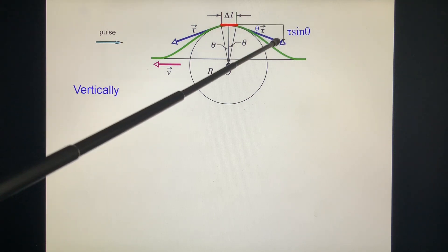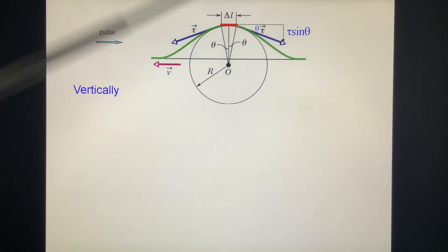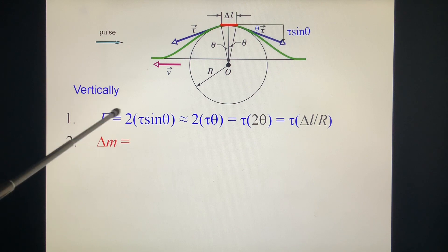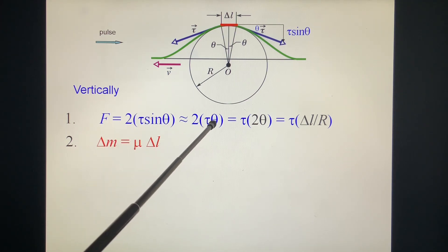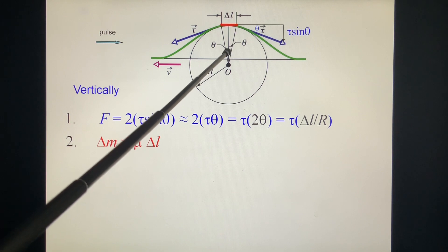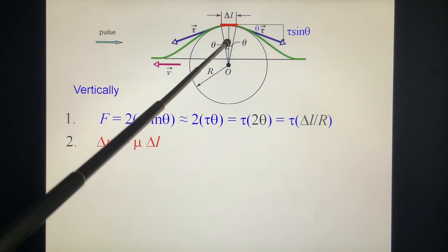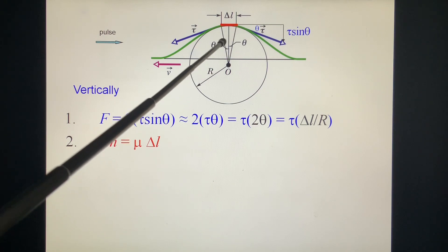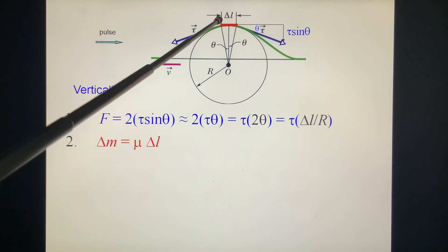Vertically, F = τ sin θ. When we take θ very small, sin θ ≈ θ. So F = 2τθ. 2θ is this angle. This angle from the calculus equals the arc ΔL over radius R. ΔL/R = 2θ.